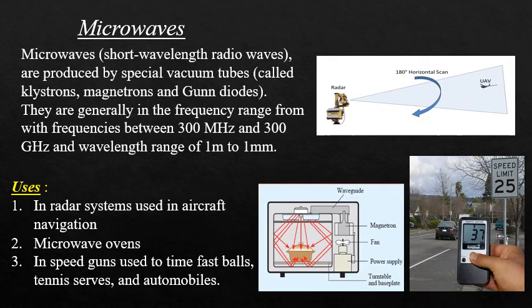Microwaves, also called short wavelength radio waves, are produced by special vacuum tubes. They are generally in the frequency range of 300 MHz to 300 GHz and a wavelength range of 1 m to 1 mm. Uses of microwaves include radar systems, aircraft navigation, microwave ovens, and speed guns used to time fastballs, tennis serves, and automobiles.